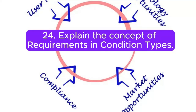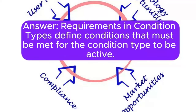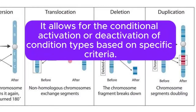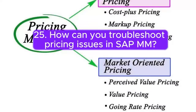Question 24: Explain the concept of requirements in condition types. Answer: Requirements in condition types define conditions that must be met for the condition type to be active. It allows for the conditional activation or deactivation of condition types based on specific criteria.